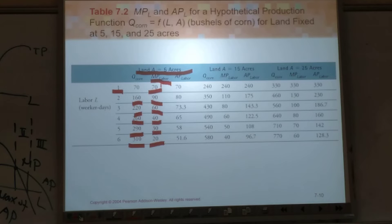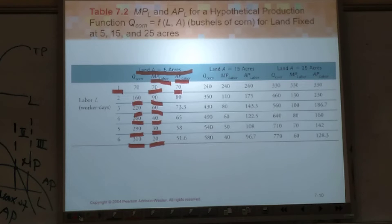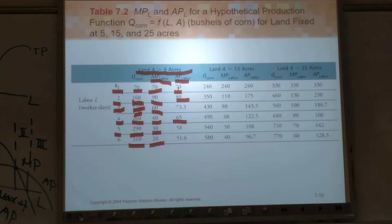So marginal product is 70, 90, 60, 40, 30, 20. The first one is 70, the second is higher, but after that it is always decreasing — that's what we call decreasing marginal product. For average product: it's production level divided by L. So 70÷1=70, 160÷2=80, 220÷3, 260÷4=65, 290÷5=58, 310÷6. In your homework, there is one question like this where you fill in the blanks.